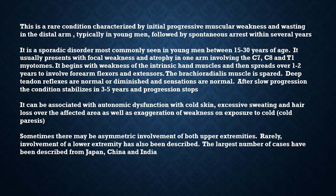After slow progression, the condition stabilizes in three to five years and progression stops. It can be associated with autonomic dysfunction with cold skin, excessive sweating, and hair loss over the affected area, as well as exaggeration of weakness on exposure to cold — also known as cold paresis. Sometimes there may be asymmetric involvement of both upper extremities.